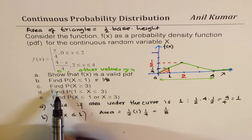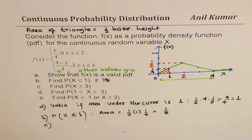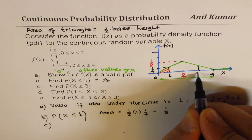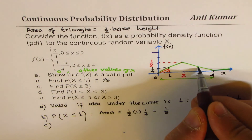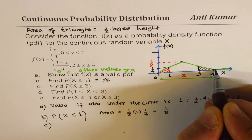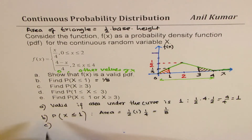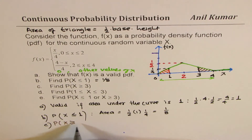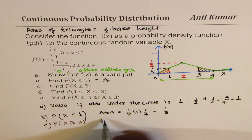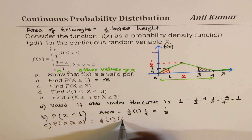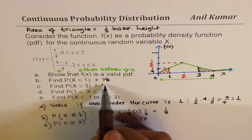For part c: probability when x ≥ 3. That means we are looking at this portion to the right from x = 3 to x = 4. Elsewhere it is 0, so it is just this right triangle. By symmetry, or by calculating 1/2 × 1 × 1/4, we get 1/8. So both parts b and c give the same probability of 1/8.